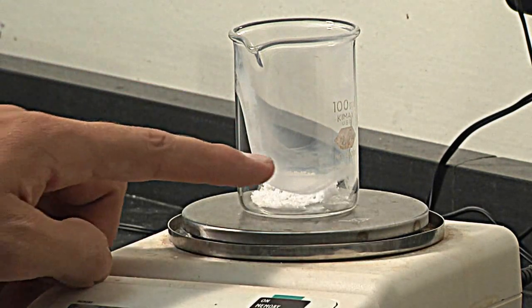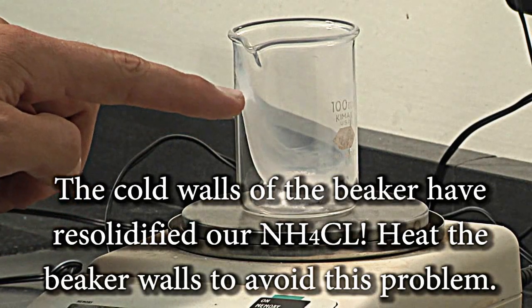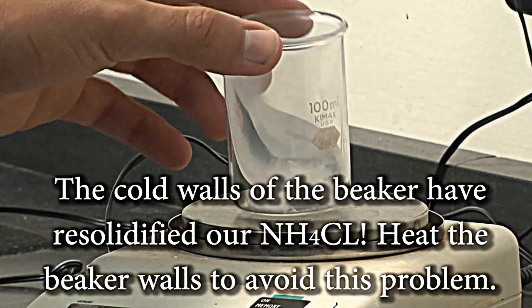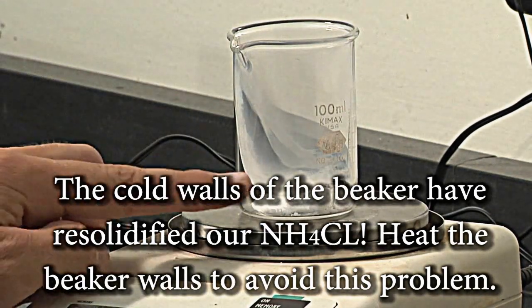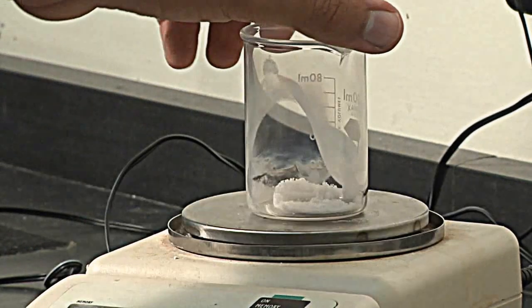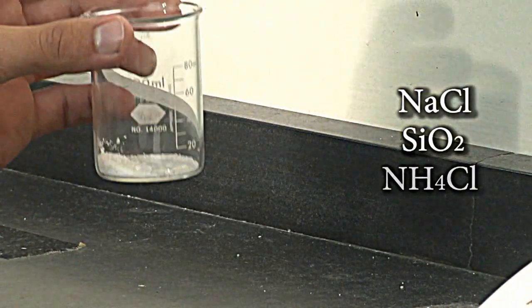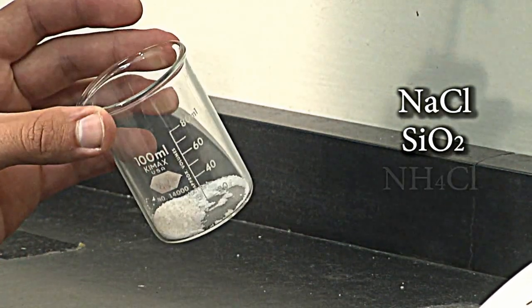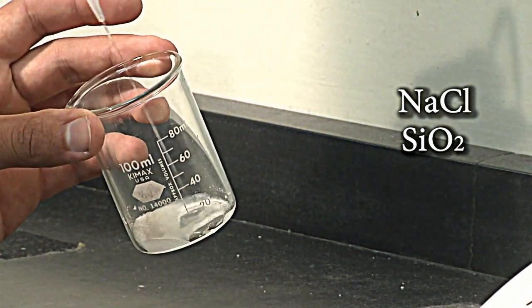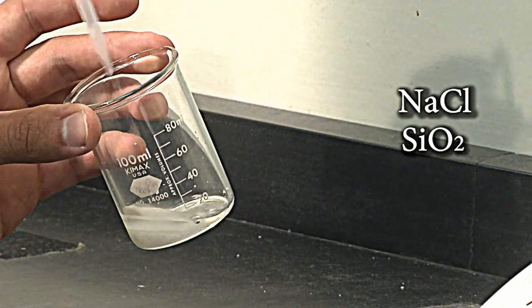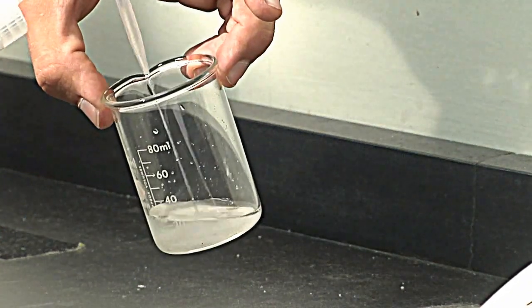The reason you want to heat the walls of the beaker is so that as the ammonium chloride sublimates, it does not re-solidify on the walls of the beaker. All that should be left now is silicon dioxide and salt. Now we can dissolve the salt with water, so we will add some water and swirl it around in order to dissolve the remaining salt.